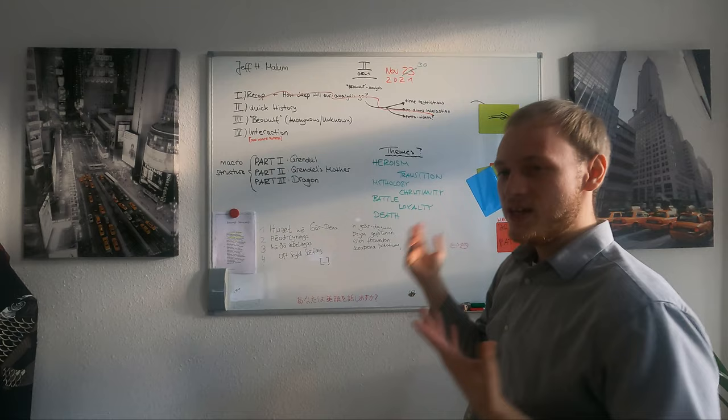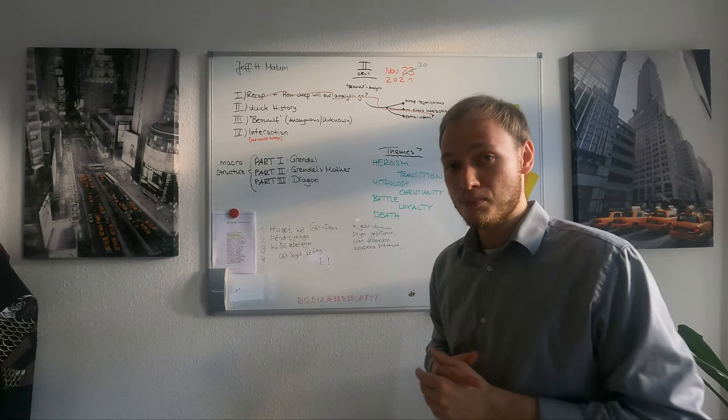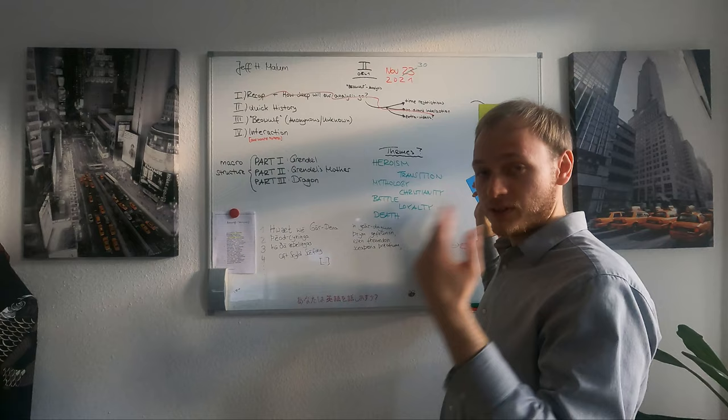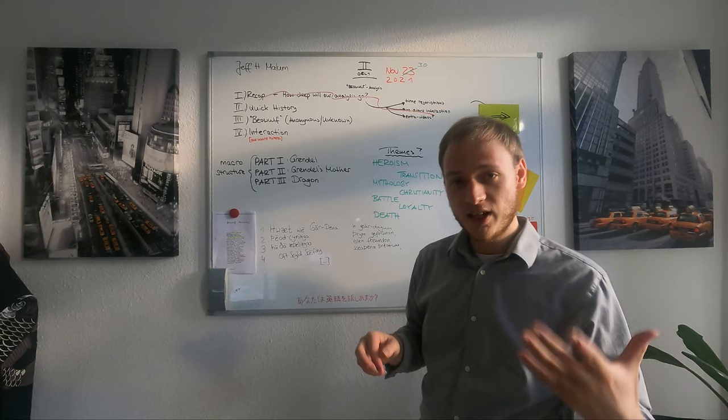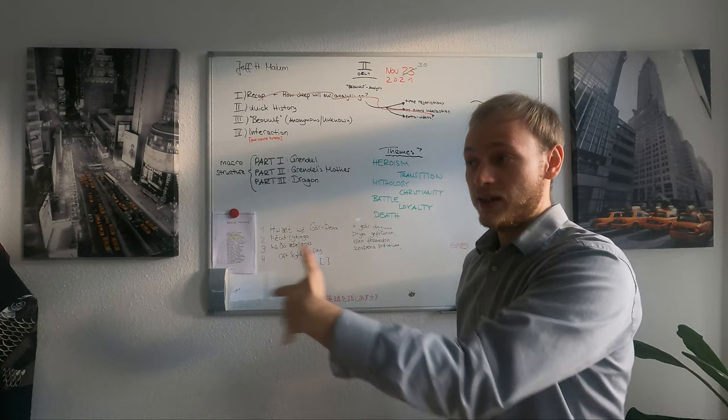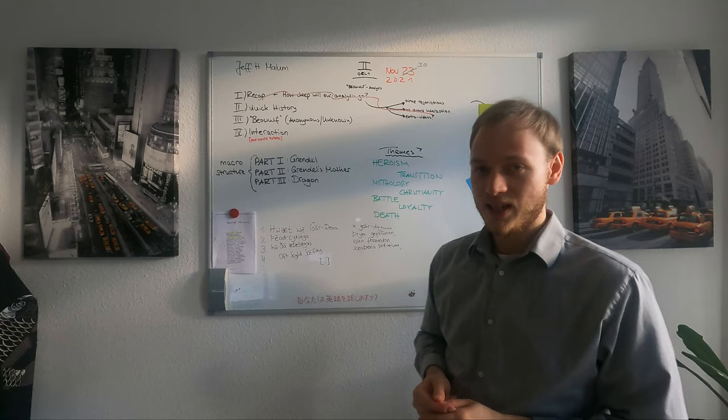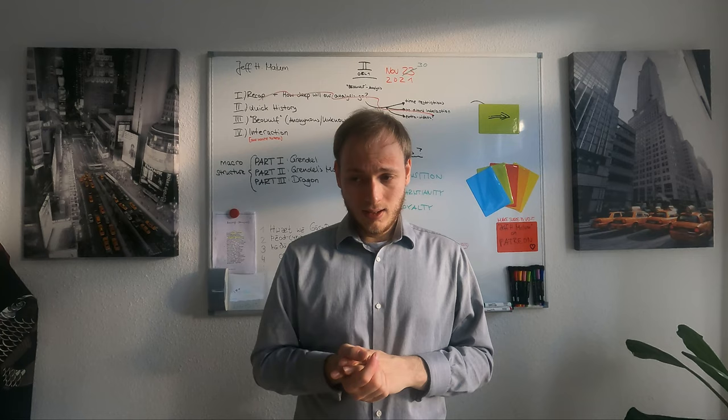So the macrostructure of Beowulf is: Grendel, Grendel's mother, dragon - those are the three battles. Some major themes that occur in the story are, of course, heroism - Beowulf as the hero coming to save King Hrothgar and the Danes. The transition from paganism to Christianization - mythology and Christian themes we talked about. Battles, obviously. Also loyalty, because Beowulf stays loyal to the Danes when protecting them over and over again, and in the end Wiglaf stays loyal to Beowulf in the final battle. And of course, death is also a major theme of Beowulf.